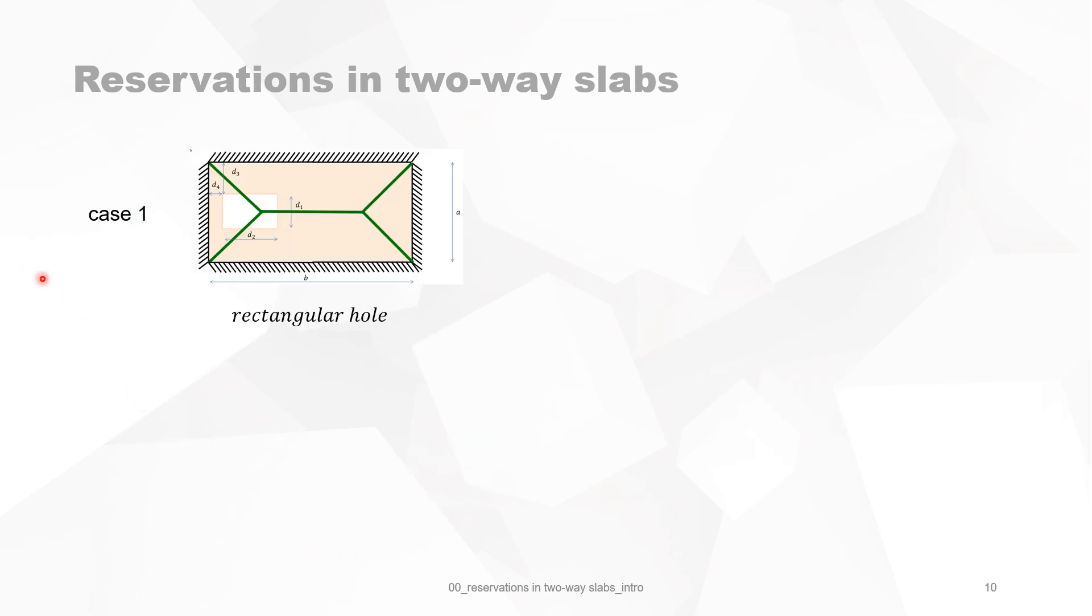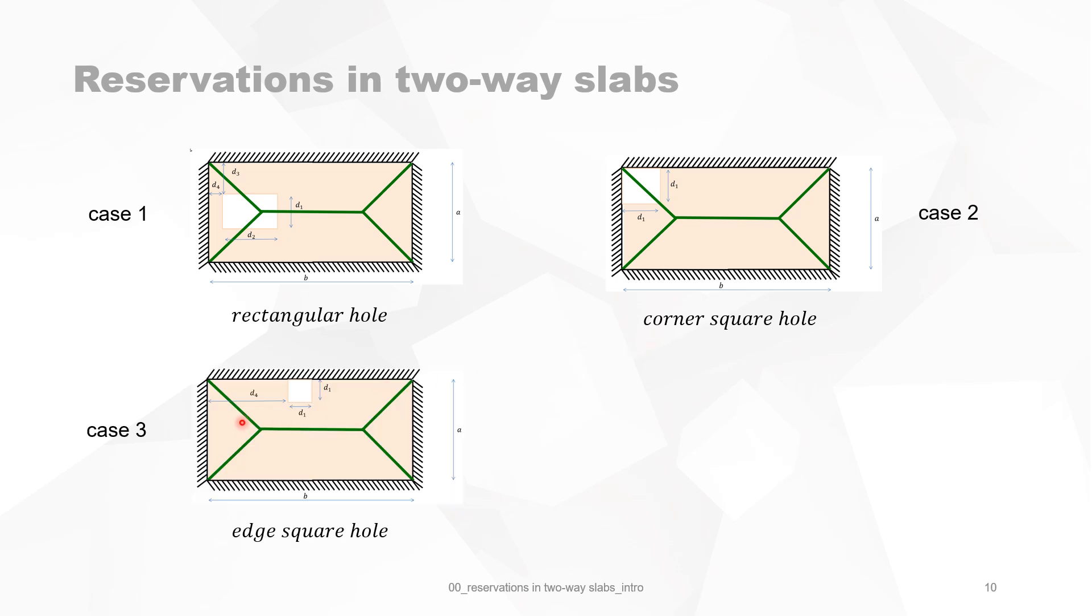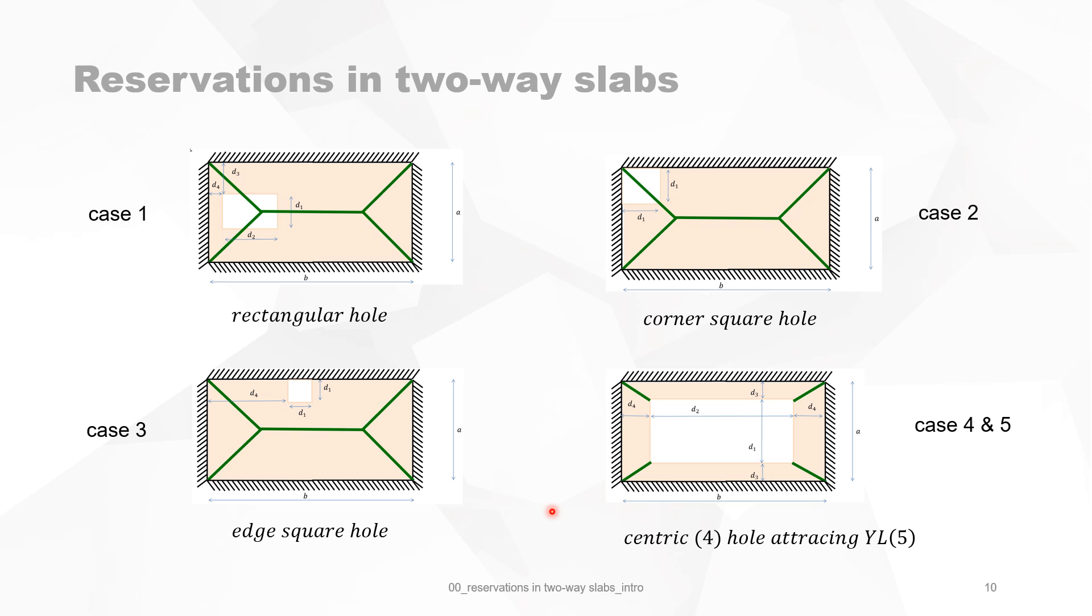So in the next videos in this playlist, we will handle each of those slabs in this configuration. And to give you an idea what the cases are, you have the rectangular slab and you see there's a reservation in the slab—this is case 1. Case 2 is a reservation in the slab right in the corner, a corner square hole. Then we look at case 3 when this hole, the square hole, is at the edge, which we call the edge square hole. And then we have a centric hole or centric hole attracting the yield lines; it's two different things. That's case 4 and 5.